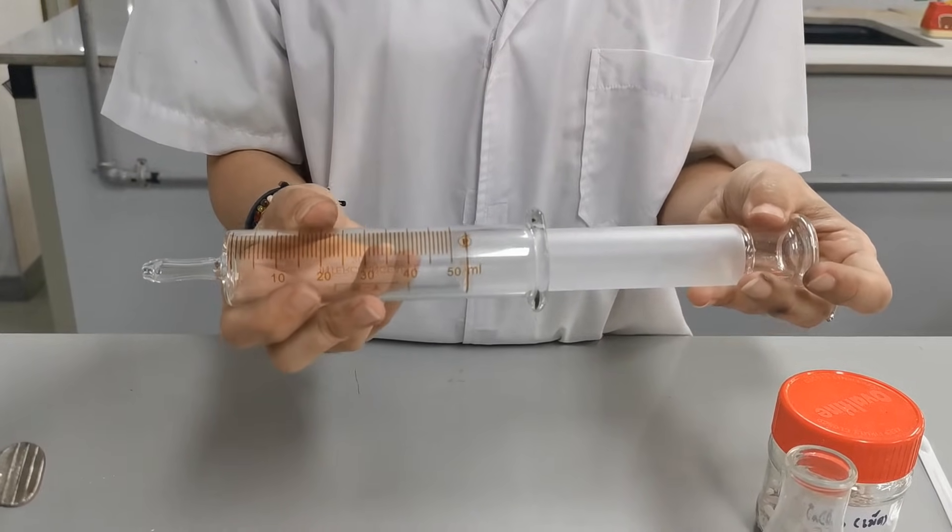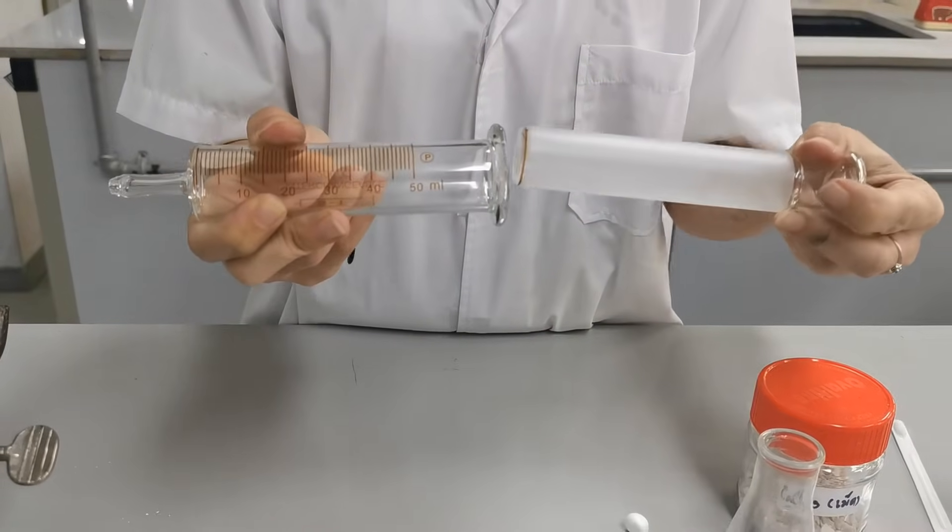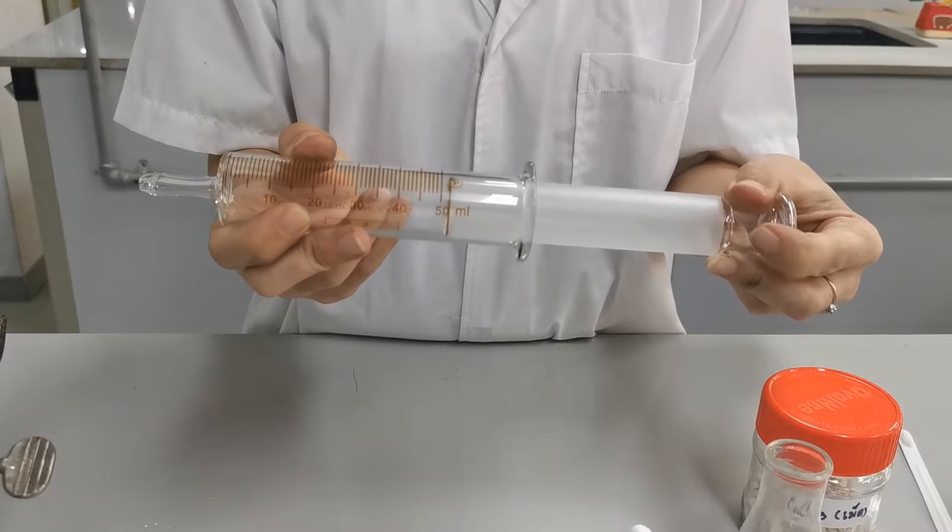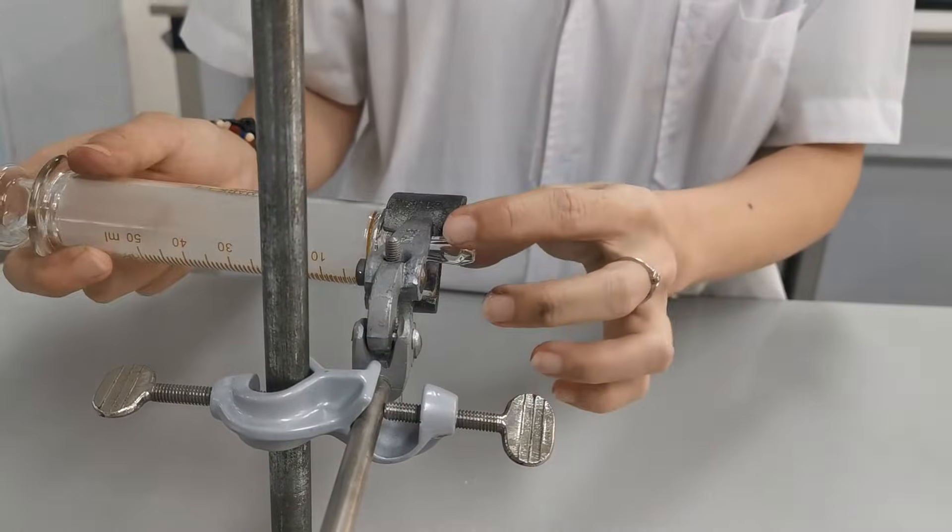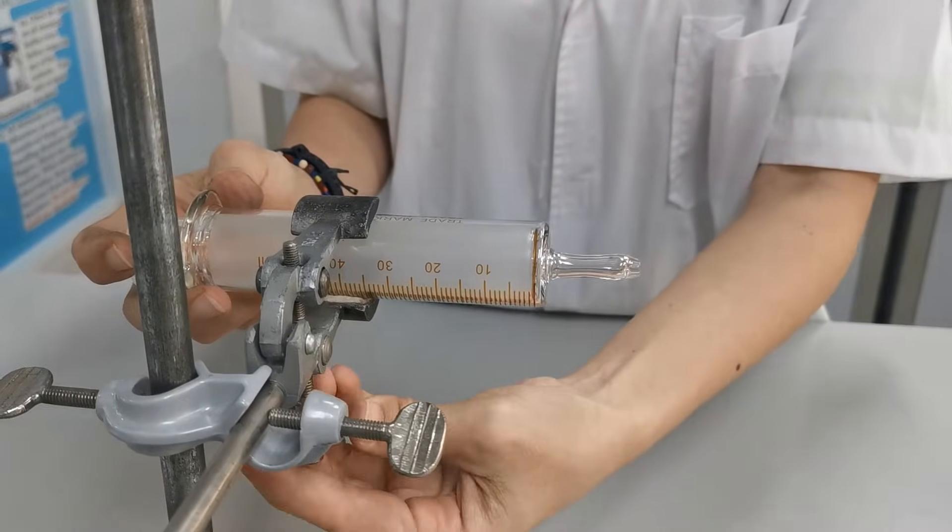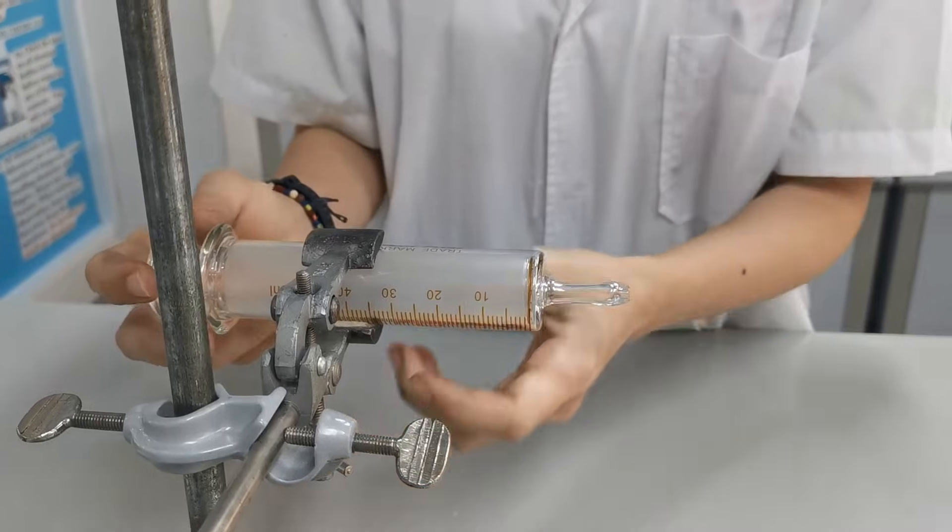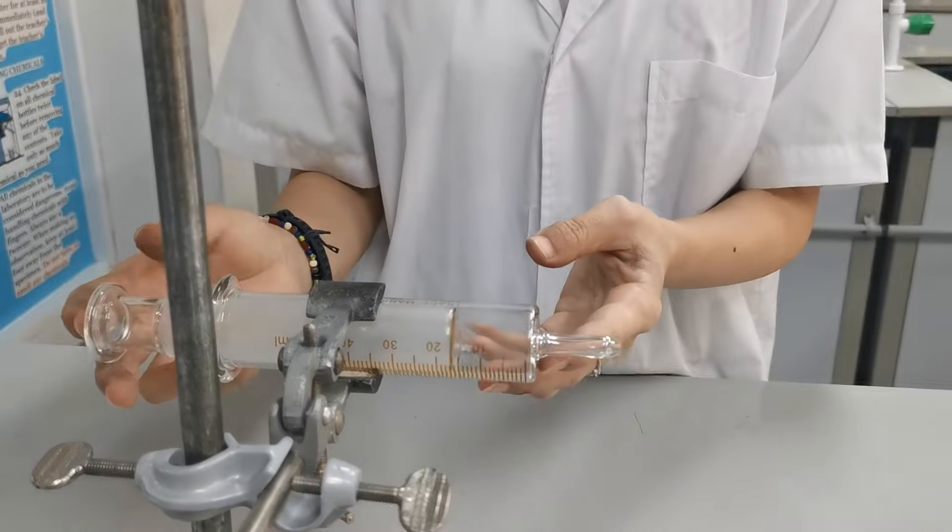Otherwise, the plunger will be pushed out too fast and will shoot out and break. The gas syringe must be placed in a horizontal position so the plunger will not be affected too much by gravity.